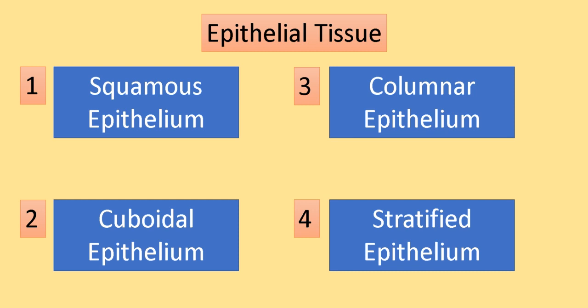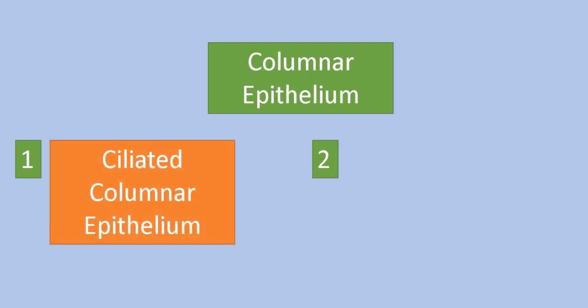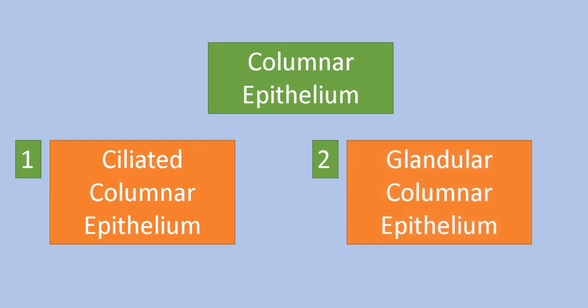Columnar epithelium is further divided into two categories: ciliated columnar epithelium, where cilia are present, and glandular columnar epithelium, which is found in the glands. Ciliated columnar epithelium is mainly located in the inner lining of the trachea, or windpipe, while glandular epithelium is located in the glands.